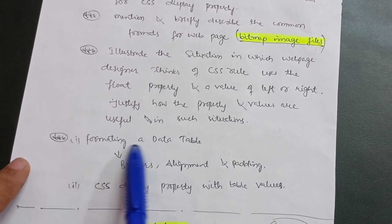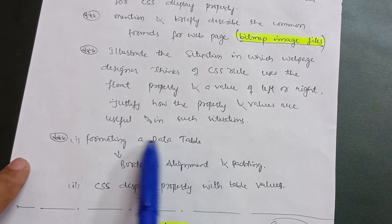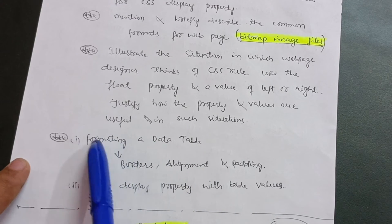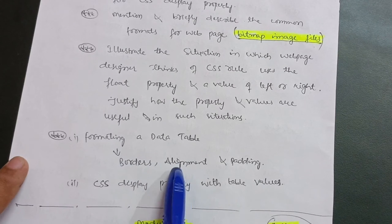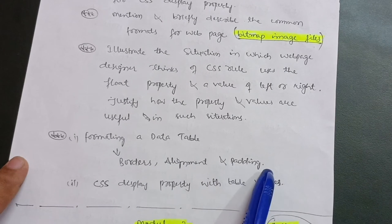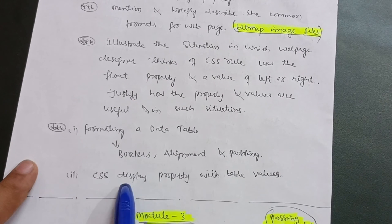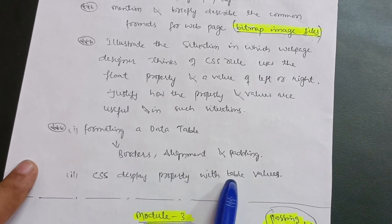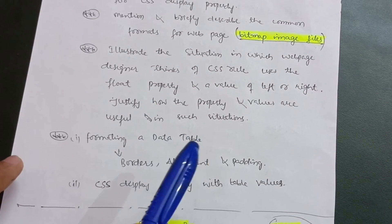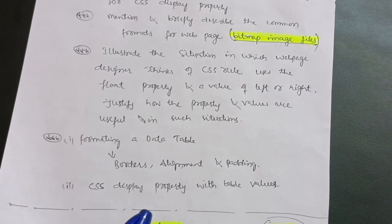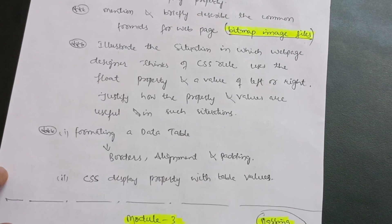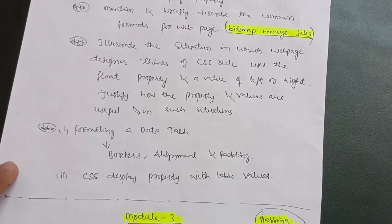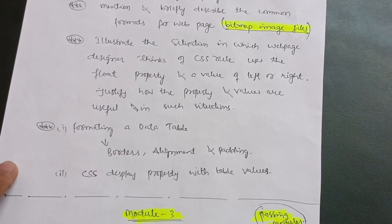Next important question: formatting a data table — as per the syllabus, this is an important topic covering borders, alignments, and padding. Next is CSS display property with table value. This content is enough for Module 4. The next passing module is Module 3.